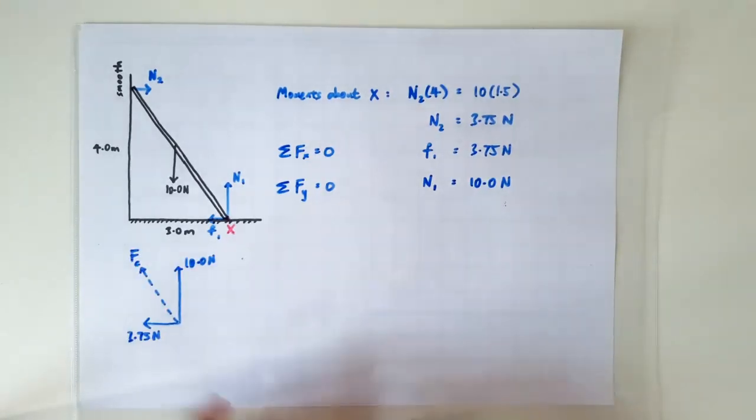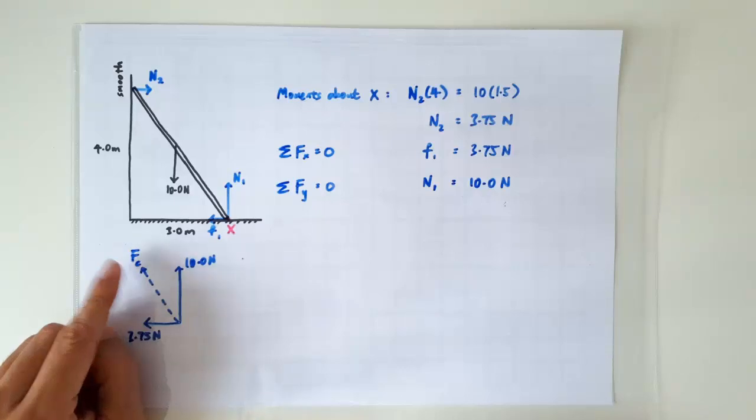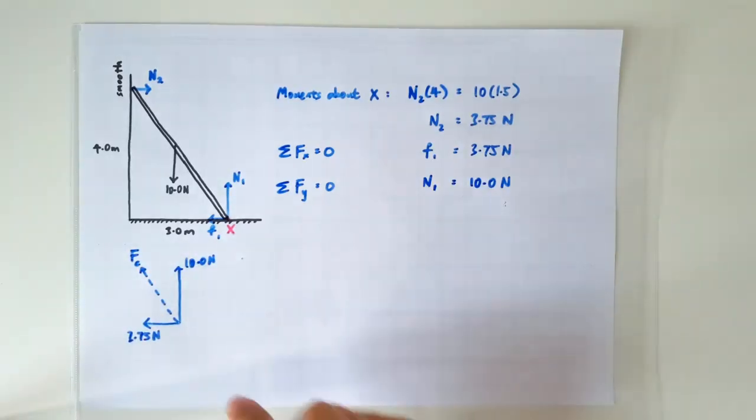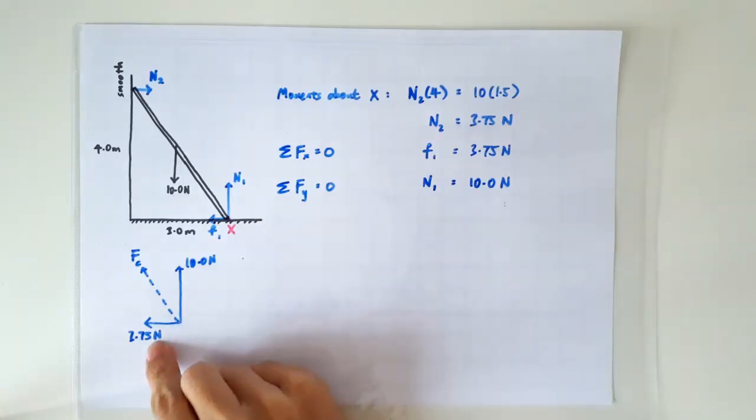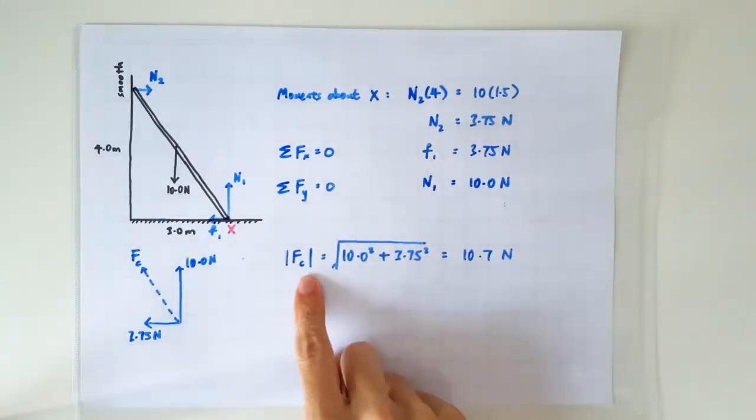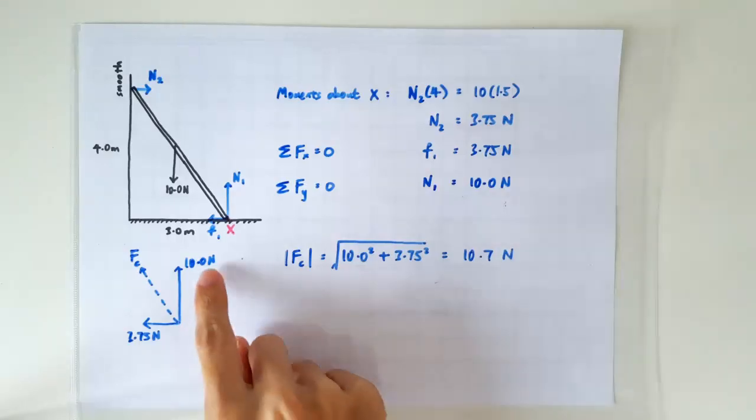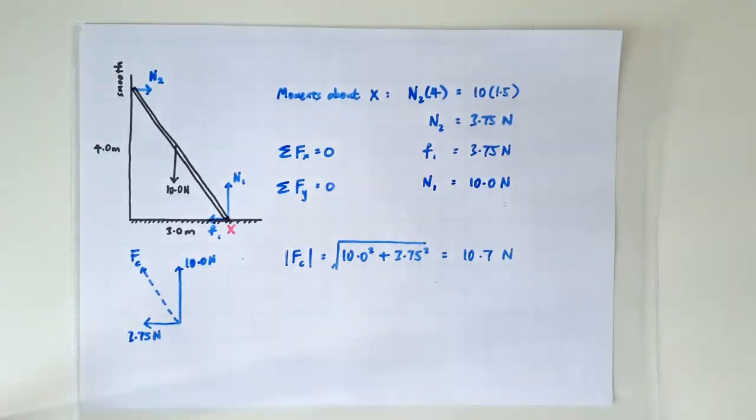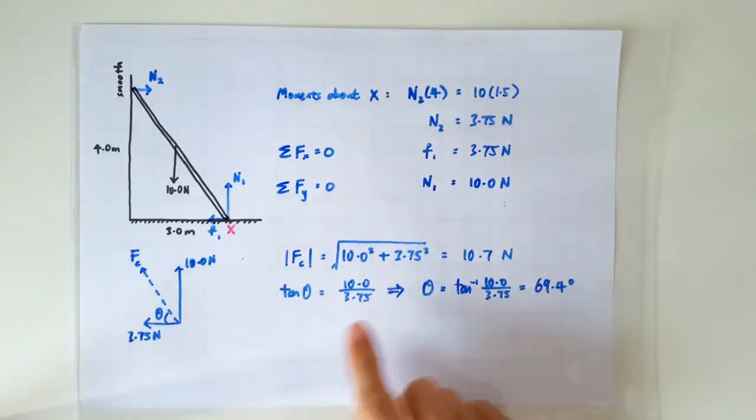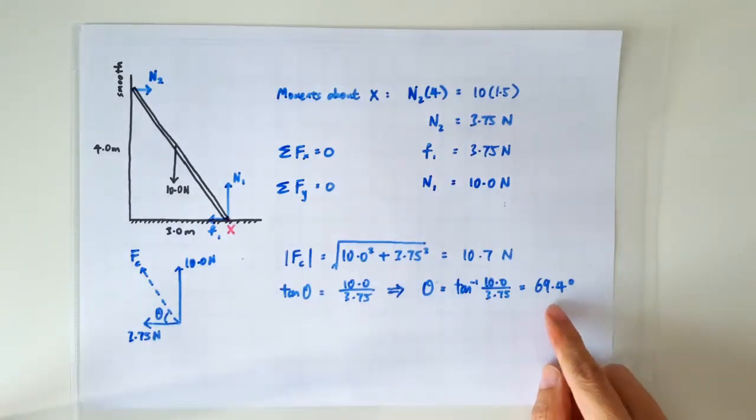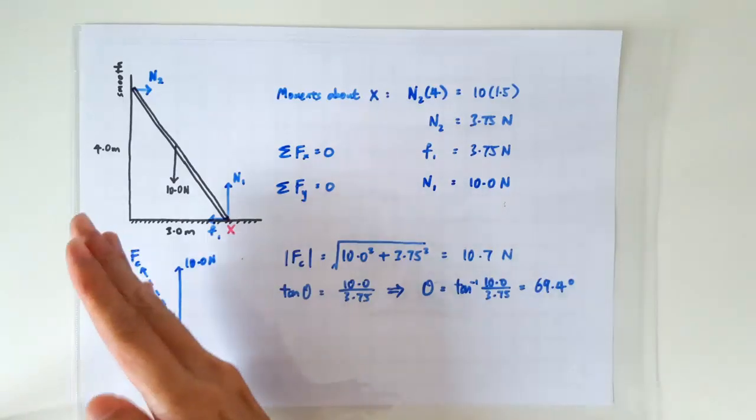Very often you'll be asked to compute the contact force, which is basically the resultant of the normal contact force and the frictional force. To find the magnitude of the contact force, we just do a Pythagoras of the vertical and horizontal components. To solve for the direction of the contact force, we'll do the tangent ratio. So the contact force turns out to be at an angle of 69.4 degrees above the horizontal.